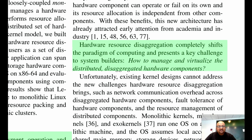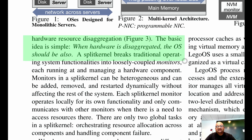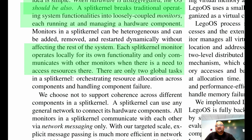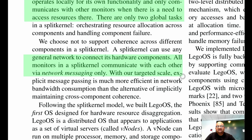The key design problem this paper deals with is: if you disaggregate all your hardware resources, how do you manage and virtualize them? How do you design operating system abstractions that can work with this disaggregated pool of hardware? The central design philosophy the authors propose is that when hardware is disaggregated, the OS should be also. The architecture they propose is called a split kernel, which is basically a monitor on a hardware resource — stateless and loosely coupled with other monitors. Each monitor locally manages its own hardware and communicates with other monitors via message passing on the network when it needs to access remote resources.